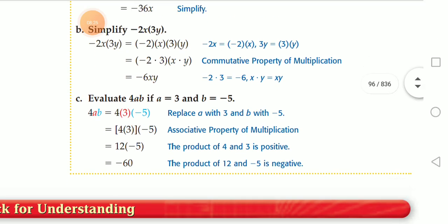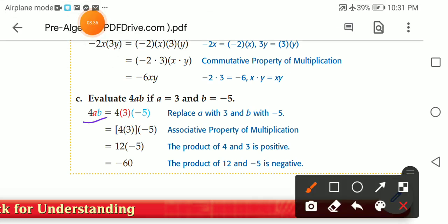Evaluate for ab if a equals three and b equals negative five. Substitute: replace a with three and b with negative five. Using the associative property, four times three gives 12, then 12 times negative five gives negative 60. That is the answer. Study well from the student book and solve this lesson in your practice book and give me your feedback. Thank you, my dear students.